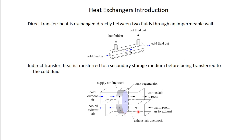This is an indirect transfer heat exchanger. The warm air coming out of your house flows through a big spinning wheel. The wheel spends some time in the warm air duct and some time in the cold air duct. It's full of little holes that the air flows through, so the warm air warms up the wheel material. As the wheel rotates into the cold duct, the warm material transfers energy to the cold outdoor air, warming it up. Then the cycle repeats. The warm air is not transferring energy directly to the cold air; instead it transfers energy to the wheel material, and the wheel material transfers to the cold air.